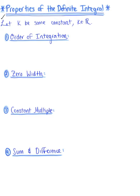The first property is the order of integration. If we have a definite integral from a to b of f of x dx, we can flip the bounds by multiplying the integral by a negative. So this is equal to minus the integral from b to a of f of x dx. We'll find this property super important when we start looking at u-substitution.